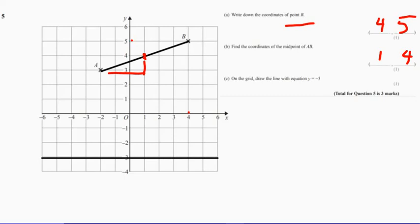Do not get confused with x equals minus 3. So this is the y axis. So everywhere along here, the y bit is minus 3. So y equals minus 3. That's the line.